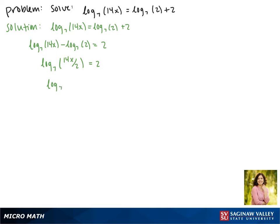Simplifying the inside gives us log base 7 of 7x equals 2.